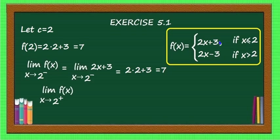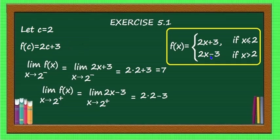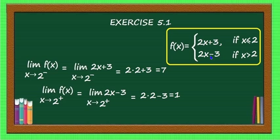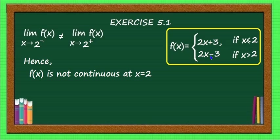Now find the right-hand limit: as x → 2⁺, f(x) = 2x − 3, so the limit equals 2(2) − 3 = 4 − 3 = 1. Since the left-hand limit (7) is not equal to the right-hand limit (1), f(x) is discontinuous at x = 2. Therefore x = 2 is the only point of discontinuity.